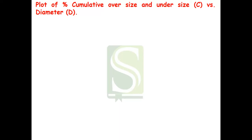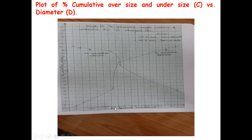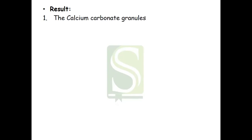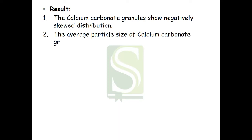The next graph plots percent cumulative oversize and percent cumulative undersize versus average aperture diameter on the x-axis. We plot the points for both oversize and undersize from the observation table and draw the graph. In the result, we report that calcium carbonate granules showed negatively skewed distribution, and the average particle size of calcium carbonate granules was found to be 850 micrometers — both obtained from the graphs.